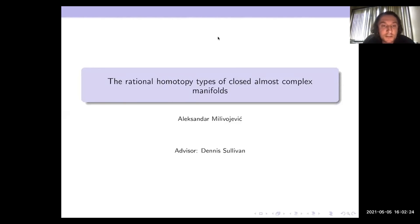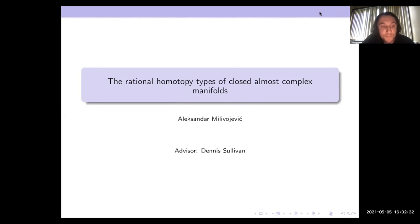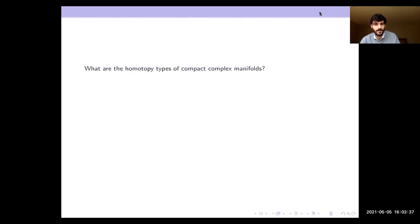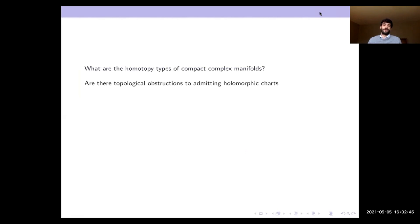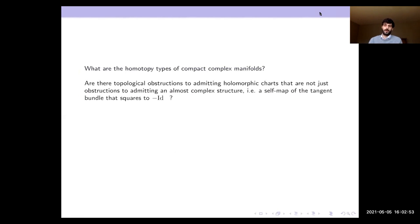Our last speaker today is Alexander Milivojevich, who will talk about the rational homotopy types of closed almost complex manifolds. Thanks for the opportunity and thanks for staying. Here are some general questions: what are the homotopy types of compact complex manifolds? These are hard questions. Another one: are there topological obstructions to admitting holomorphic charts that aren't just obstructions to admitting an almost complex structure, where an almost complex structure is like multiplication by i on the real tangent bundle — a self-map of the tangent bundle that squares to negative the identity?